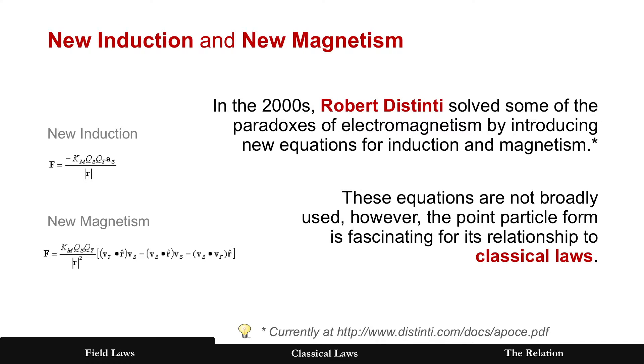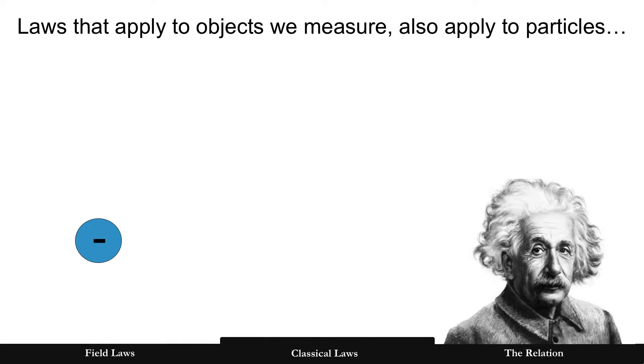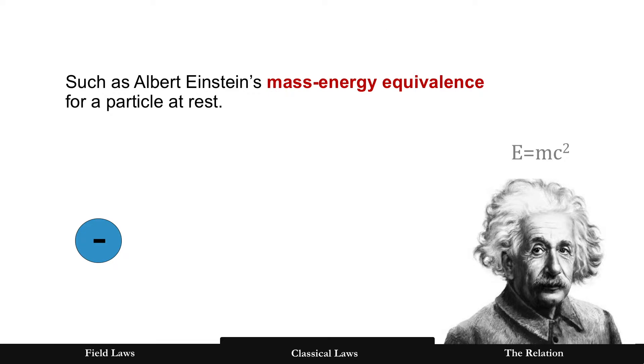And what are those classical laws? Well, since laws apply to objects that we measure, and all of these are made of particles, they should also apply to particles. Let's start with Einstein's mass energy equivalence for a particle at rest. It can be calculated based on the mass of that particle.